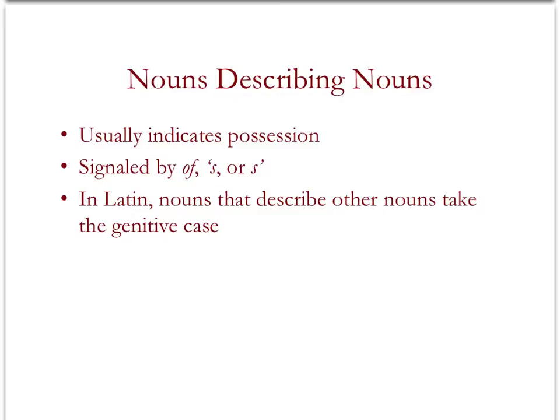Sometimes in sentences, we have nouns that describe other nouns. These usually indicate possession — things like the girls of ESLA or the boys of summer. In this case, they signal possession: the girls belong to ESLA, the boys belong to summer. This is usually signified by an 'of' connecting the two words, or an -s or an apostrophe-s.